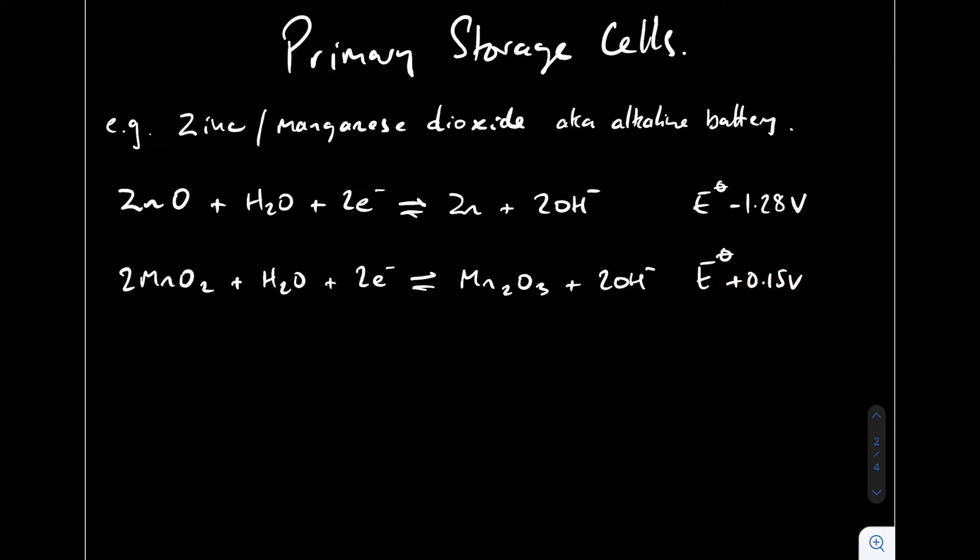The first thing we'll do is look at how these compare with each other. You can see this one here is more positive than this one, which means that this half equation will run in the forwards direction, because it's more able to accept electrons than the zinc oxide. So if that's running in the forwards direction, this is going to have to run in reverse, and you can see the zinc is going to give up its electrons in the process.